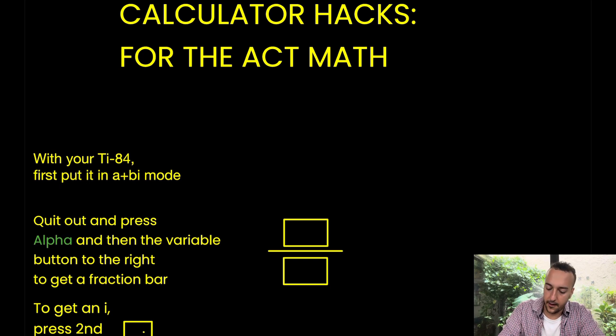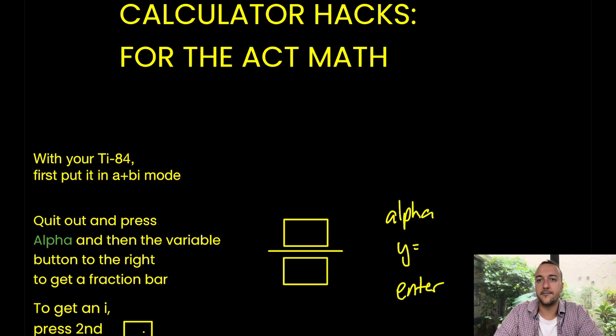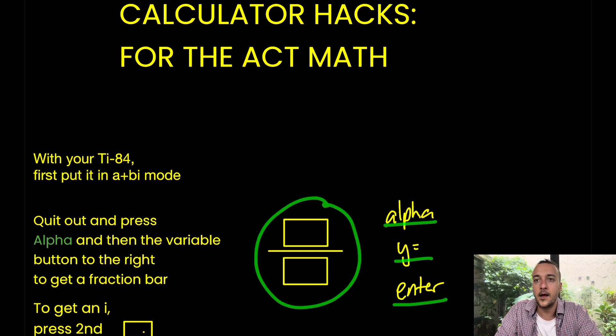If it doesn't give you a fraction bar, try this trick. It's alpha, y equals, and then enter. Again, if my fraction bar trick didn't work, the shortest way is just pressing alpha and then the variable button. If that doesn't work, please press alpha, then the y equals button, and then just press enter. You should find yourself with a beautiful fraction bar like that. A lot of my students don't even know about that fraction bar, and it helps you so much with fractions.